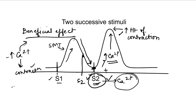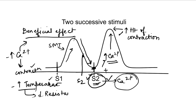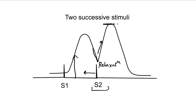The second reason for the beneficial effect is an increase in temperature. Whenever ATP is used, some heat is released, causing an increase in temperature. This increase in temperature decreases the resistance of movement, and that is why we get an increase in height of contraction. This same reasoning applies to all cases of increased height, whether the second stimulus is given in the relaxation period or the contraction period.